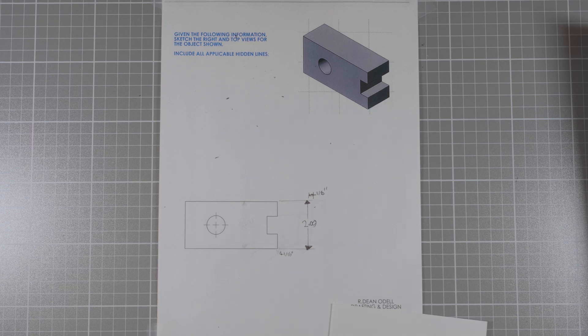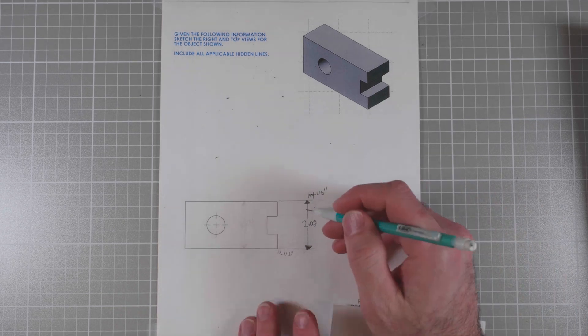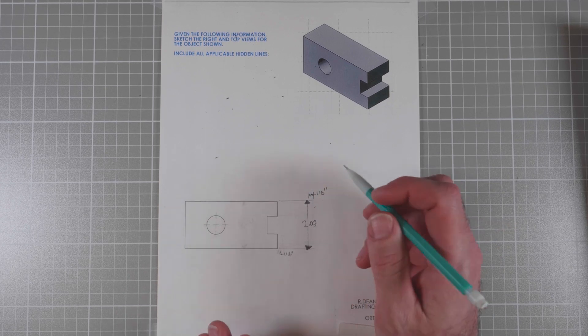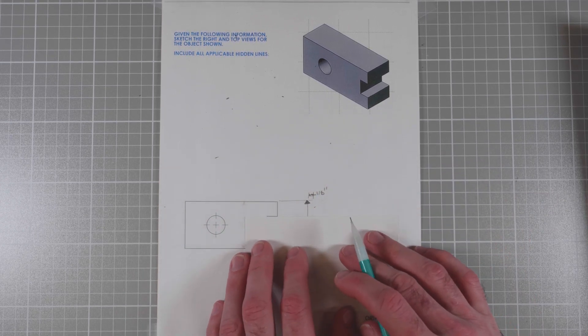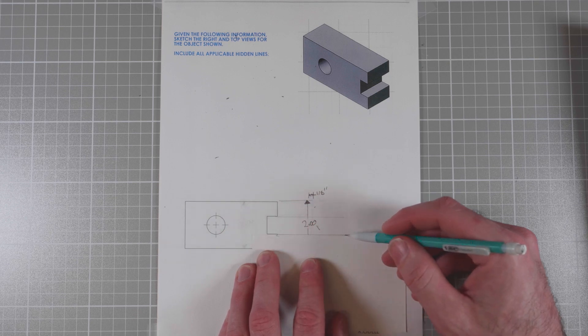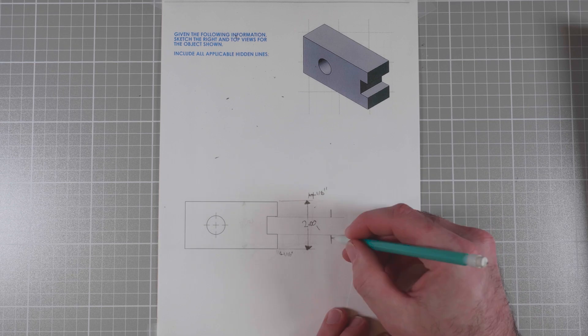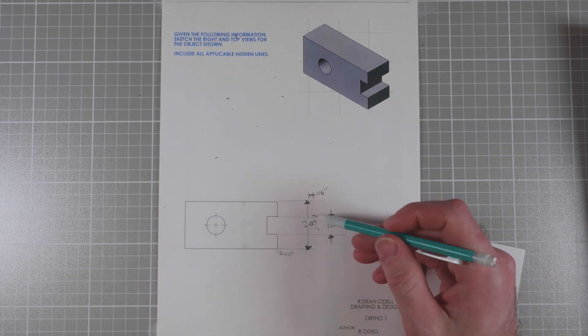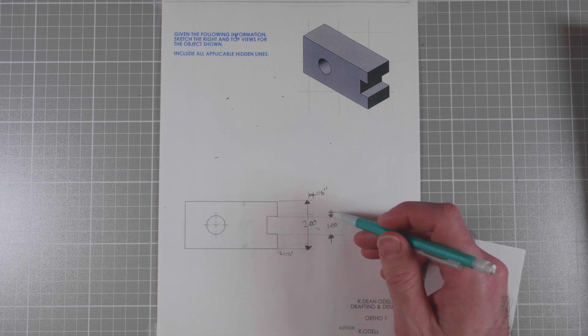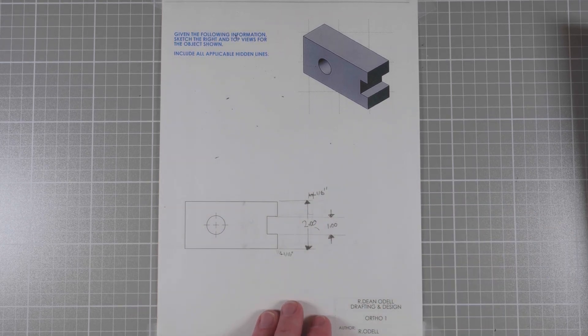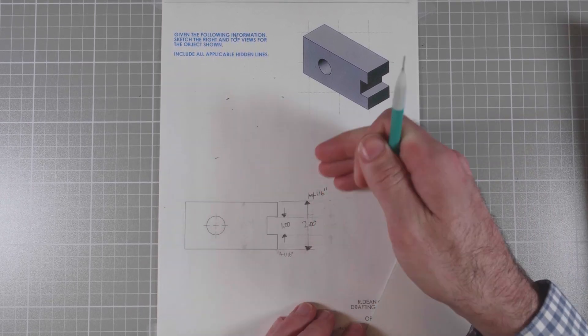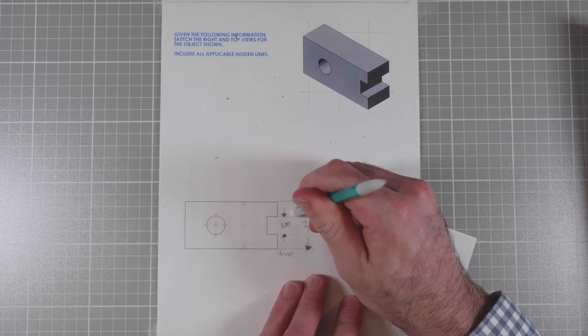The next thing is that we have to pay attention to where we put the dimension lines. It's not the end of the world for an extension line to cross an extension line, but if we can avoid it, we want to. Here's what it would look like if I put this smaller dimension outside of the larger dimension. Now we've got extension lines crossing dimension lines. Not ideal. We can avoid that by putting this dimension inside of the larger dimension.